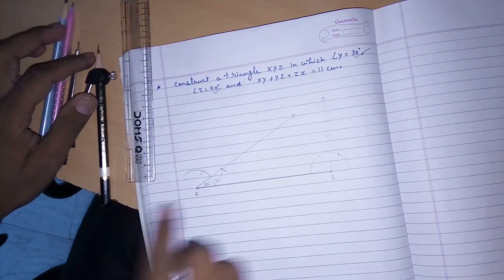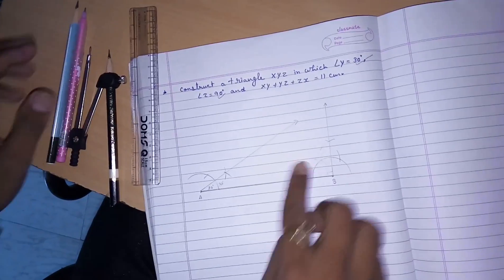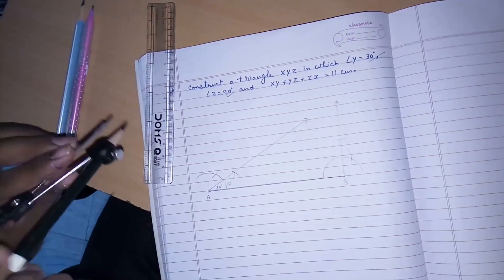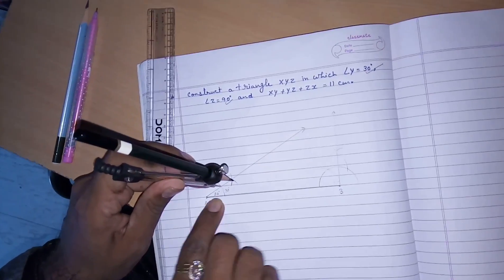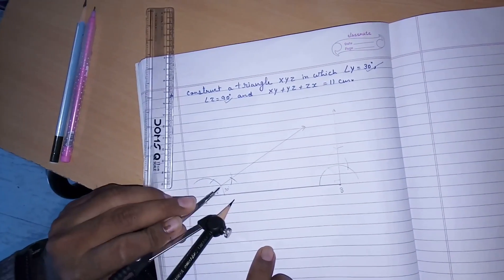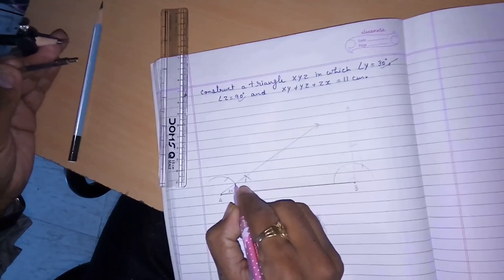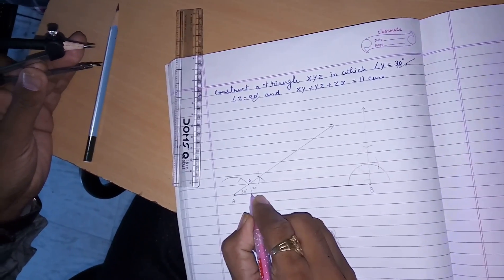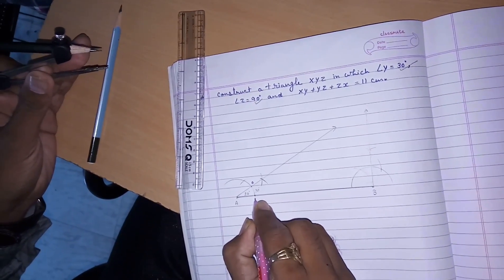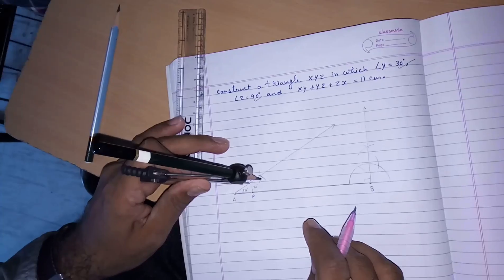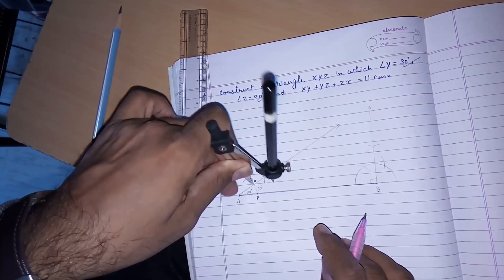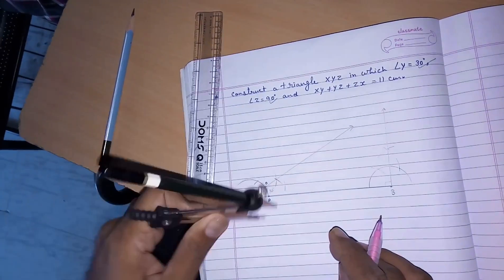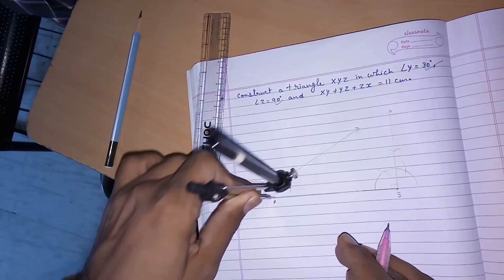Now we have to draw the bisector of this 30 and the bisector of 90. How we can draw the bisector? First we have to look at this point. I am giving a name to this point so that you will clearly understand it. It is O and P.